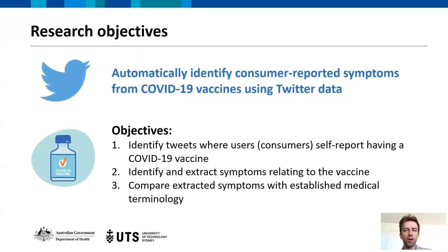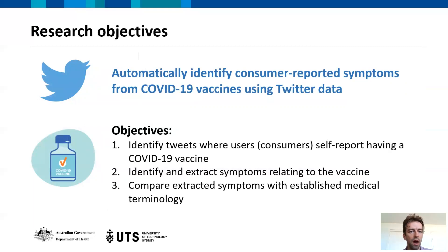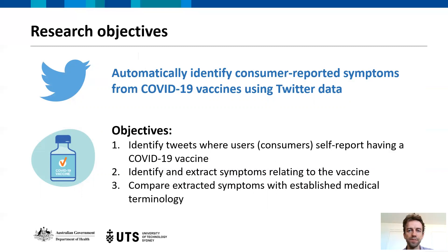Our research objectives for this project were to automatically identify consumer-reported symptoms from COVID-19 vaccines using Twitter data. We broke this down into three steps: first, identifying tweets where consumers self-report having had a COVID-19 vaccine; second, identifying and extracting symptoms relating to the vaccine — because tweets can also contain references to pre-existing conditions, so the trick is to only pull out symptoms the user claims were caused by the vaccine; and third, mapping the extracted symptoms to normalized standard terminology.